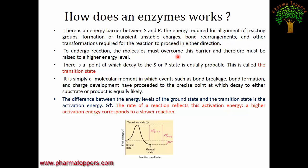Energy is required because the reaction involves formation of unstable charges, bond rearrangement, and other transformations — such as transfer of functional groups, bond rearrangement, and repositioning of hydrogen bonds. These rearrangements are necessary for converting substrate to product. The molecule must overcome the energy barrier by going from the ground state to the transition state and back to the ground state, which is facilitated by the enzyme.